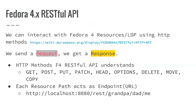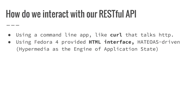A RESTful API works on requests and responses - it's like talking to your server. Since we are working over HTTP, we have some methods to interact with Fedora 4: GET, POST, PUT, PATCH, HEAD, OPTIONS, DELETE, MOVE, and COPY. Each one works directly on the resource path. Each resource path, as we saw in the last session, acts as an endpoint for a REST API. So if we have a resource stored inside a path, and we want to modify or do something with that resource, we use that path URL. The terms URL, URI, and path will be mixed up constantly during this lesson because at the end they are the same in this case.